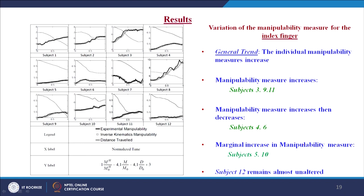Coming to the variation of the manipulability measure for the index finger among the 12 subjects, the general trend is that the individual manipulability measure generally increases. The manipulability measure increases significantly for subjects 3, 9 and 11; increases then decreases for subjects 4 and 6; marginal increase is observed in subjects 5 and 10; and subject 12 remains almost unaltered in manipulability measure.